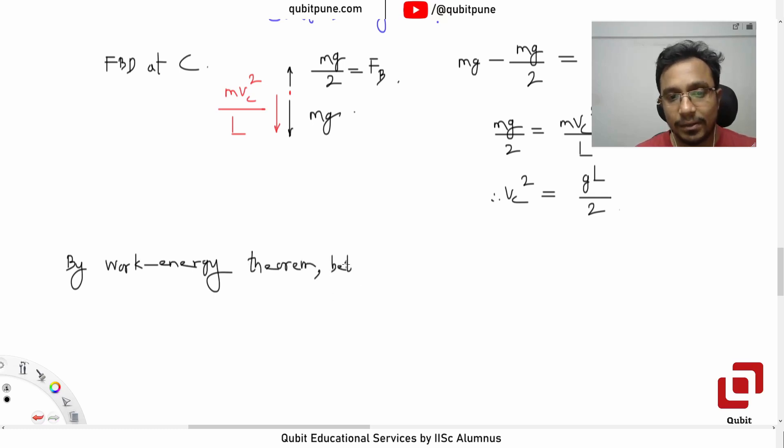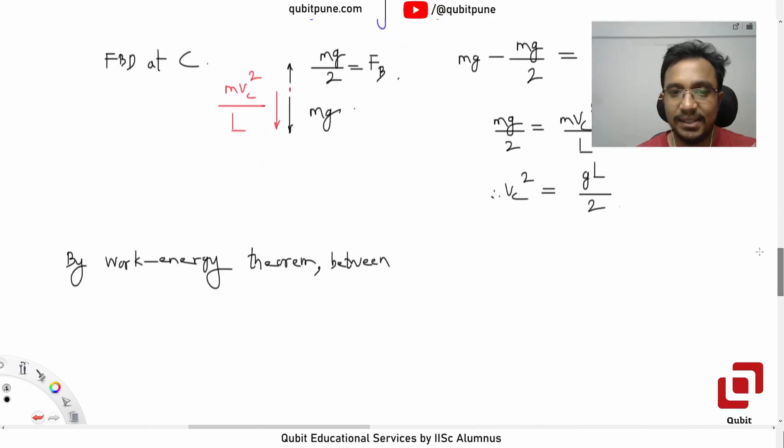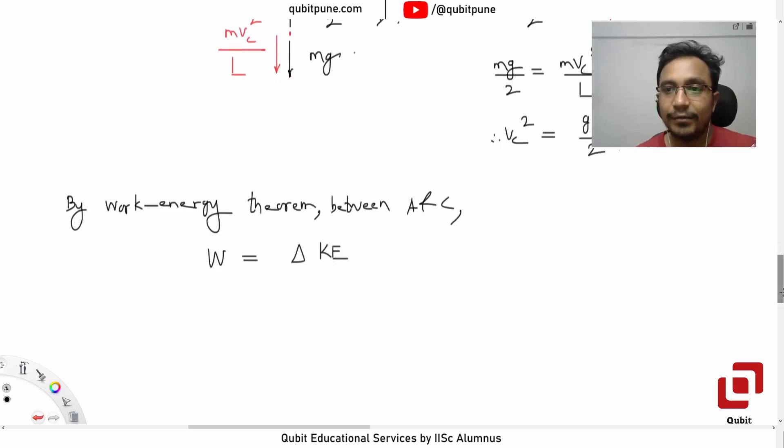By work energy theorem between A and C, work done is equal to change in the kinetic energy. Work done is equal to change in the kinetic energy.